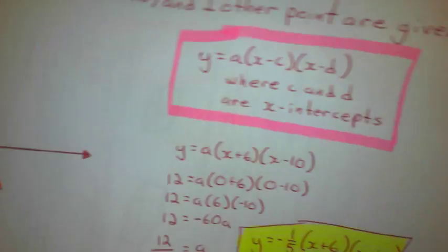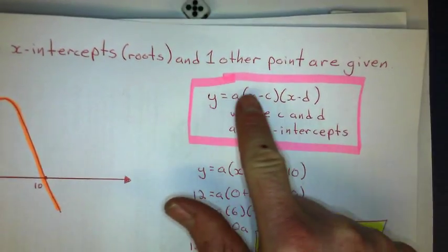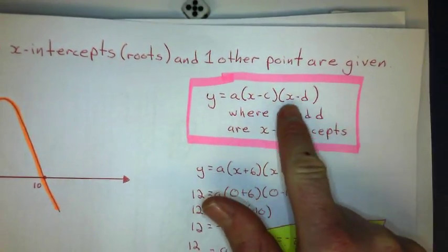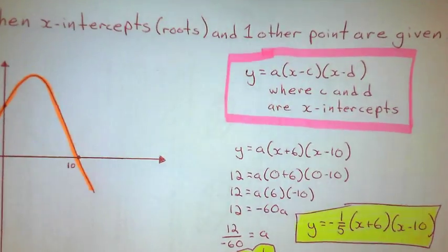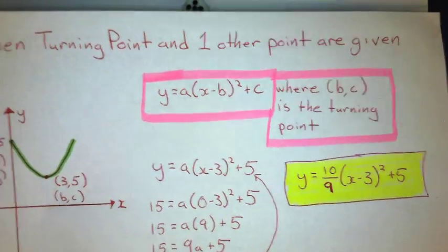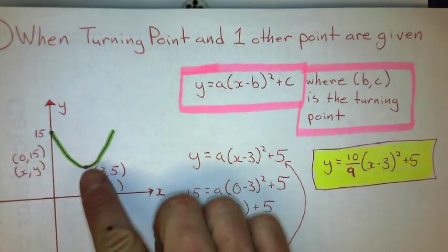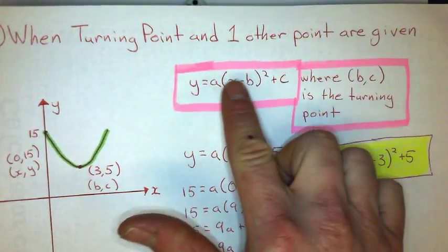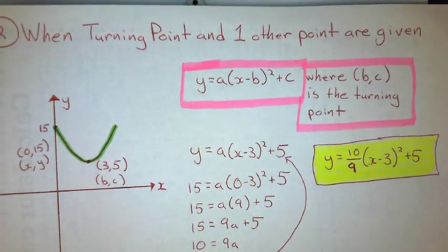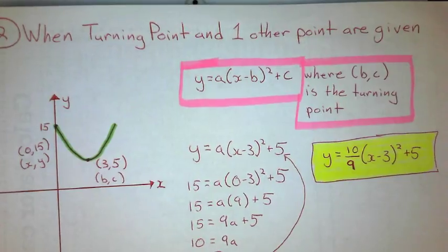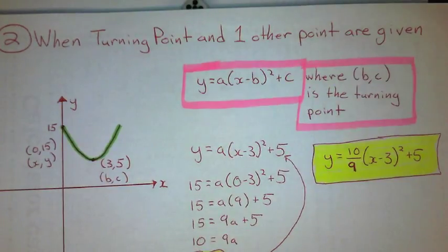Just to review quickly: when the x-intercepts are given, we use the factored form. If they're not given and we have a turning point and one other point, we use the vertex form. That's probably the easiest way to tackle these types of problems. Good luck!